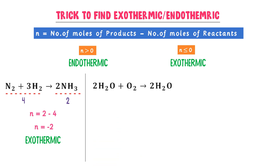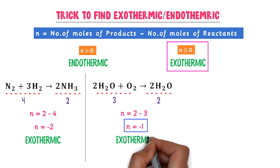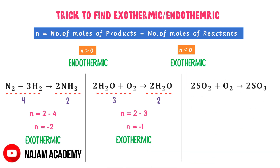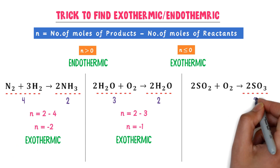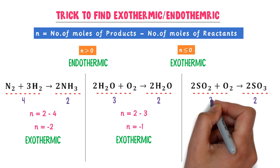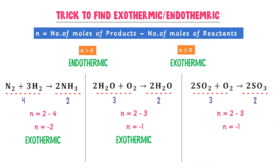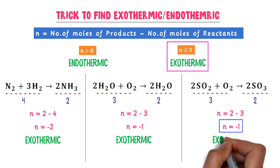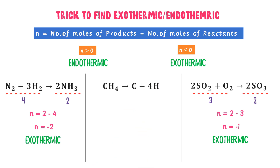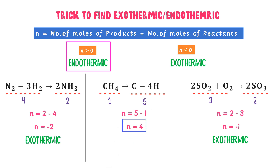For the second reaction, the number of moles of product is 2 and the number of moles of reactants is 2 + 1 = 3. So n = 2 − 3 = −1; n is less than 0, so it is also an exothermic reaction. For the third reaction, similarly 2 − 3 = −1; n is less than 0, so it is exothermic. For the fourth reaction, the number of moles of products is 1 + 4 = 5 and the number of moles of reactants is 1. So n = 5 − 1 = 4; n is greater than 0, so it is an endothermic reaction.